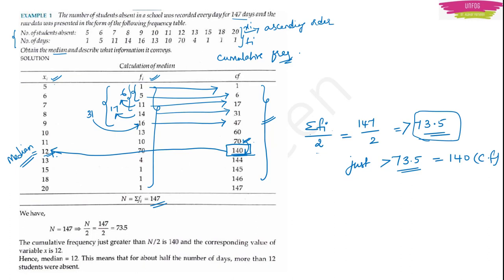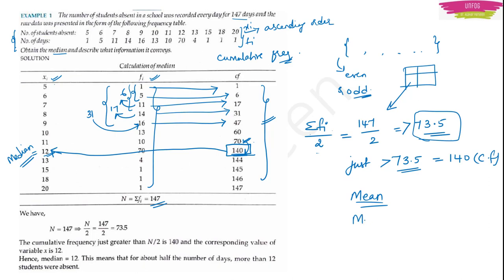To summarize: use the odd/even formula when given a simple list of numbers. Use the cumulative frequency procedure when given a frequency distribution table. Now we are done with mean and median. The third measure of central tendency is mode.